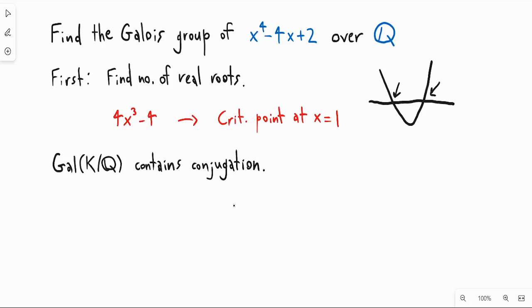Okay, so why is this helpful? Because we can also see that this polynomial is irreducible by Eisenstein's criterion. So this is irreducible by Eisenstein's criterion with p = 2. And so we know also that the Galois group is transitive.